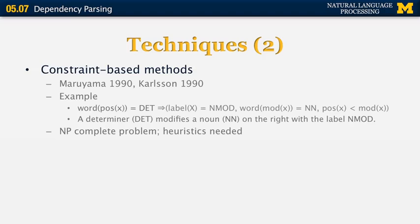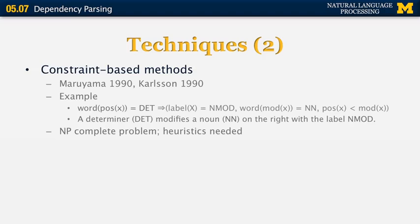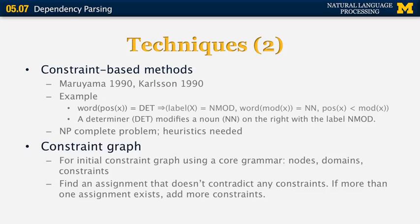Another set of techniques is based on constraint satisfaction, introduced in the early 1990s by Maruyama, Carlson, and others. For example, a rule might state that a determiner modifies a noun on the right with label 'nmod,' with the position of the part of speech required to be before. Constraint-based methods are problematic because constraint satisfaction is NP-complete and requires significant heuristics. The idea is to represent the sentence as a constraint graph with domains, nodes, and constraints, then find an assignment that satisfies all constraints, adding further constraints when multiple assignments exist.